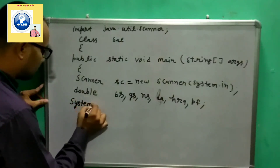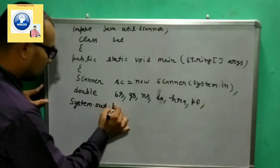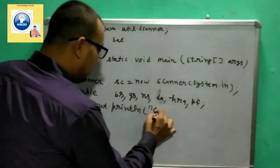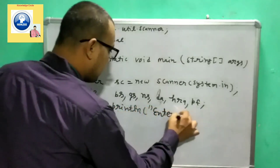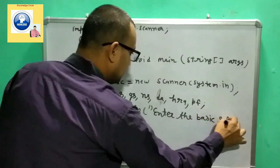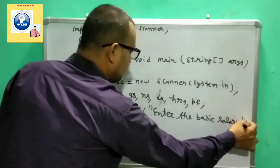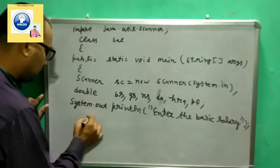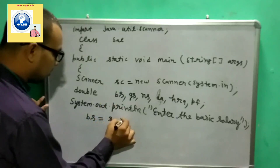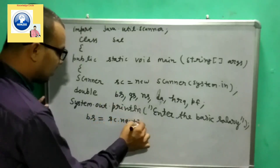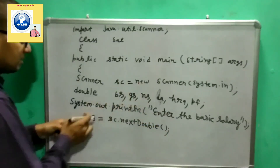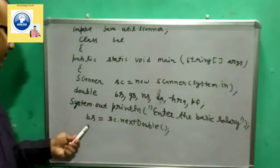The next step is to ask the user to enter the basic salary. We print a message: 'System.out.println("Enter the basic salary")'. When the user enters the value, we store it in 'bs' using 'sc.nextDouble()', so the basic salary will be stored in bs.